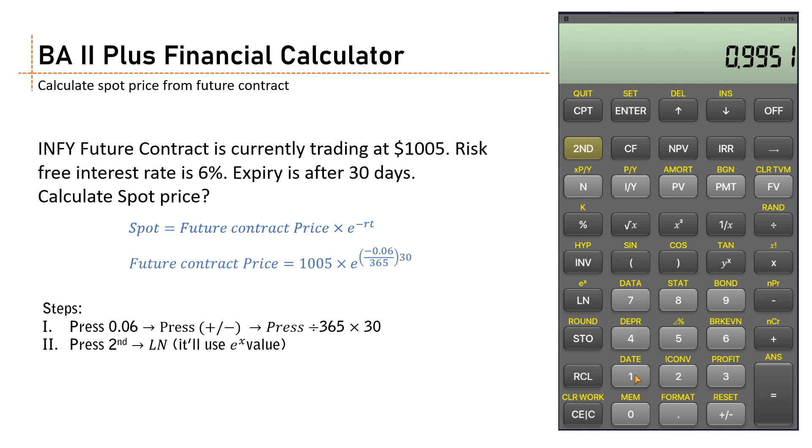Now multiply this thing with the future contract price, that is 1005, and get the value. So we get the value here which is 1000.0560. So this is basically the present value or the spot price.